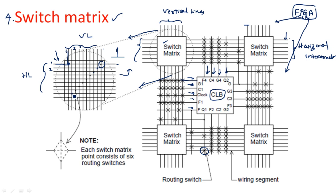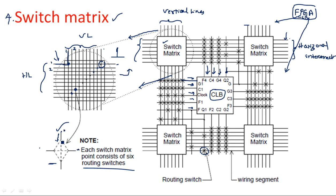If you go deeper into the switch matrix, each particular connection point, when zoomed in, will have a structure with six routing switches. Each switch matrix point consists of six routing transistors. The data can be transferred vertically from top to bottom, from top to left-hand side, or from top to right-hand side, depending upon the corresponding switch being on.